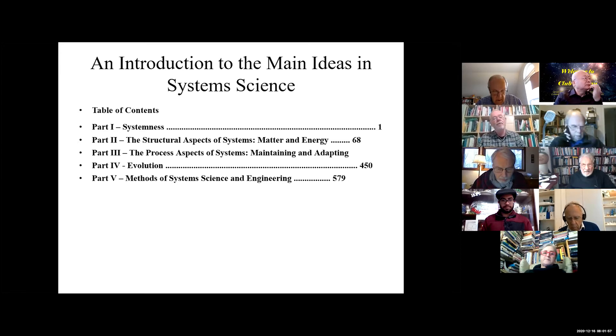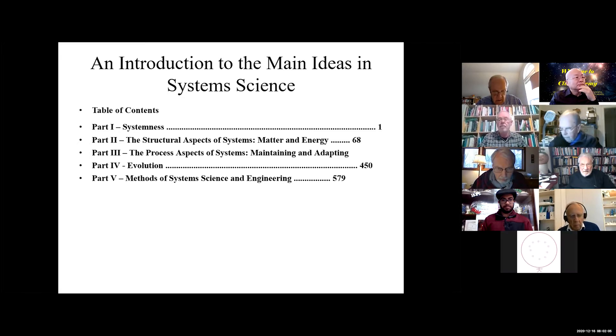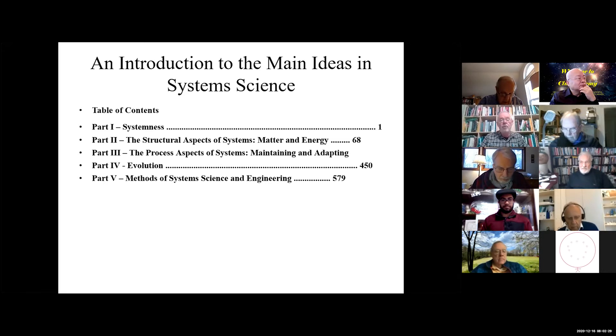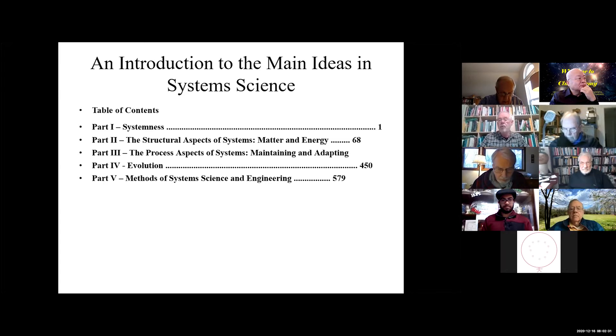Going through it, you've got five parts. The first part I call systemness, which is basically just a description of what it means to be a system. Then getting into more details: the structural aspects of systems, the process aspects of systems, and then getting into some larger topics having to do with evolution, emergence, and things of that nature. And then part five was to look at how we use all this in systems engineering and other practices.